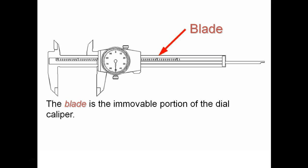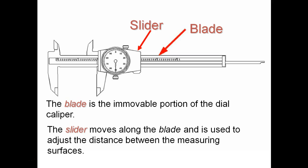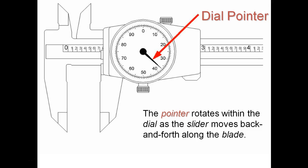Now the blade, that's what we're just looking at, this is the immovable portion of the dial caliper. Where the slider itself, that's where the dial is located, that's the portion that actually moves along the blade and how we actually do our measuring. And then while you're moving it you have your dial pointer itself and that's what's spinning as the pointer rotates with the dial and slider moves back and forth along the blade. As you play around, as you see it, as you roll it's going to do one full spin for every inch it travels.